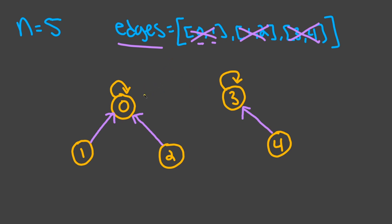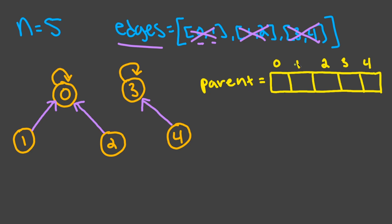To get the number of components, all we have to do is check how many different parents there are. We'll have an array with all of the nodes storing the parent for each node. Index zero represents node zero, index one represents node one, and so on. The parent for node zero is zero, for node one it's zero, for node two it's zero, for node three it's three, and for node four it's three. In this array, there are only two different numbers — zero and three — and those are the two representatives we chose. So in the end we return two, because we have two different parents meaning two different graphs.